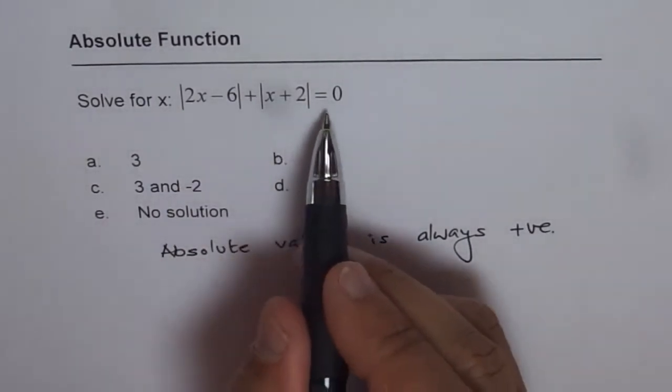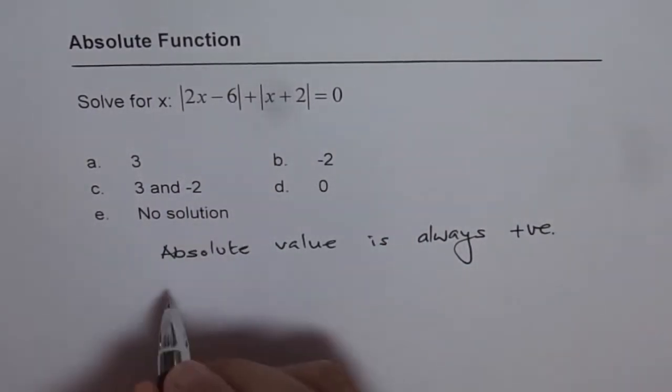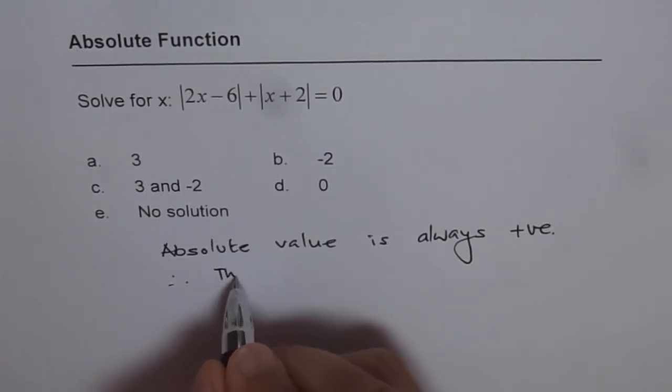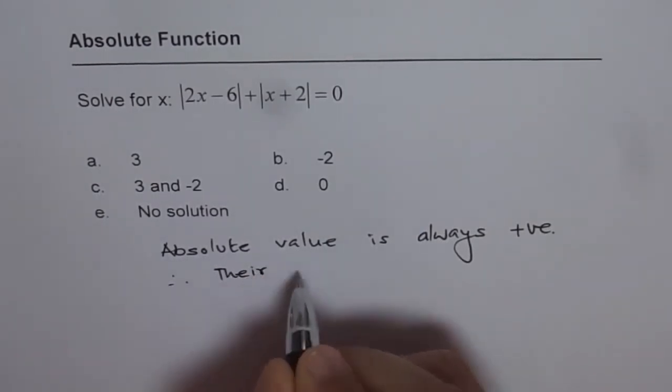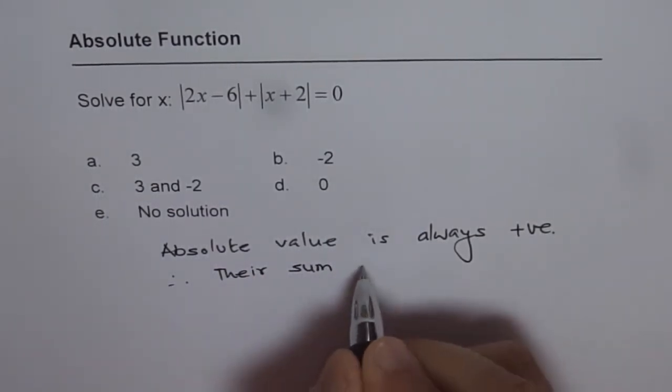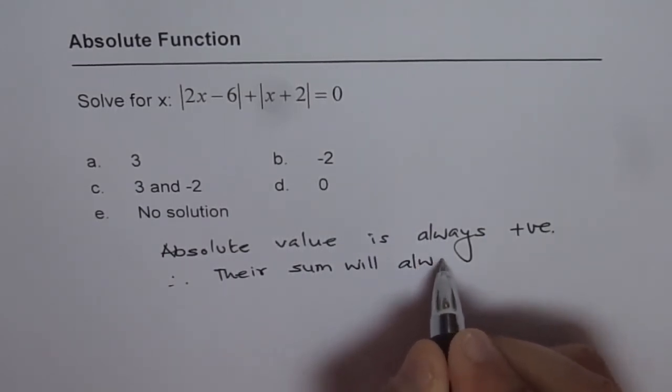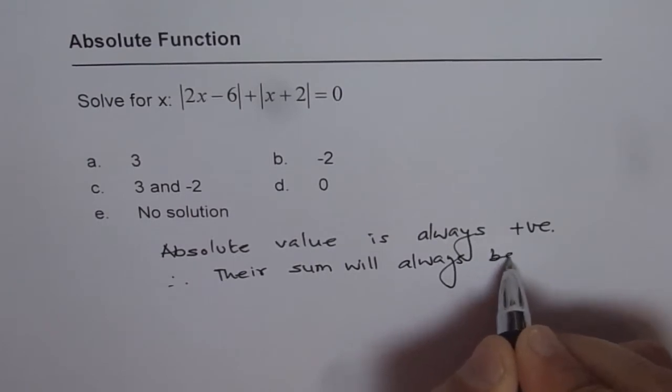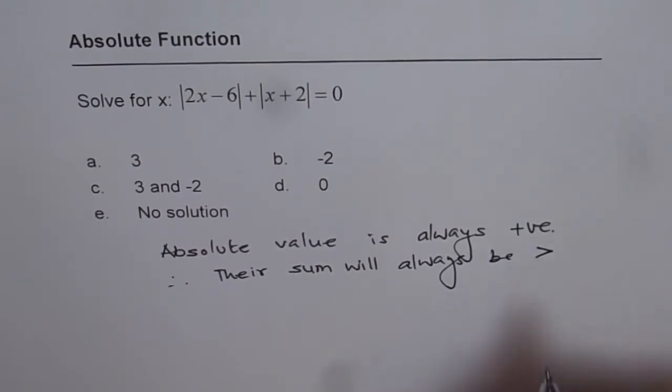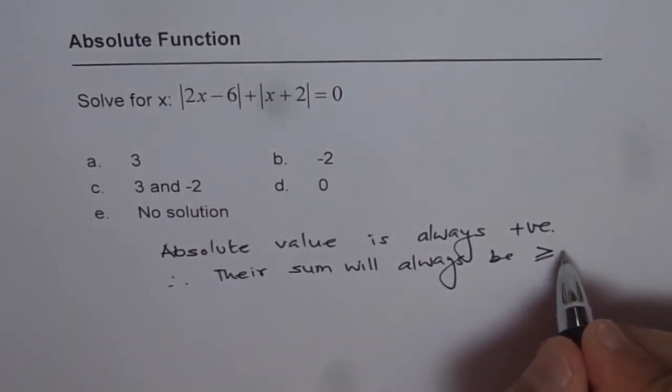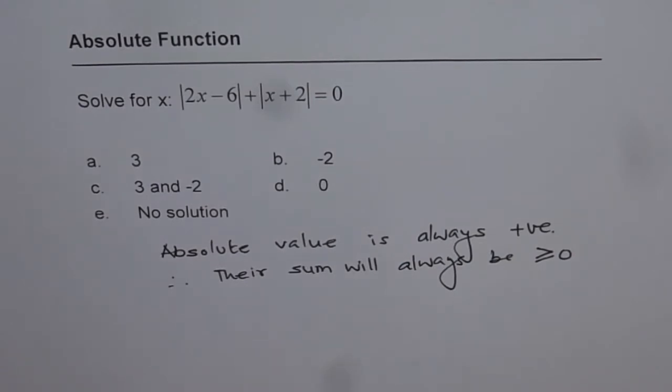And when you add two positives, you cannot get 0, right? Therefore, their sum will always be greater than or equal to 0. So, that is what is our starting point.